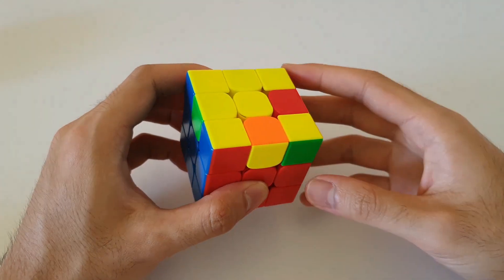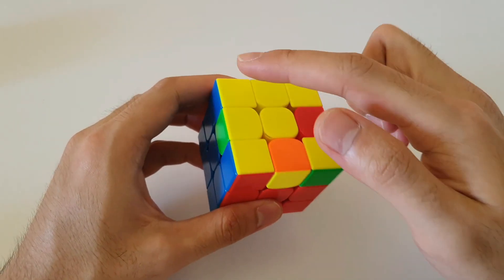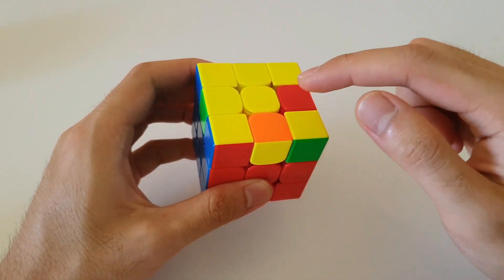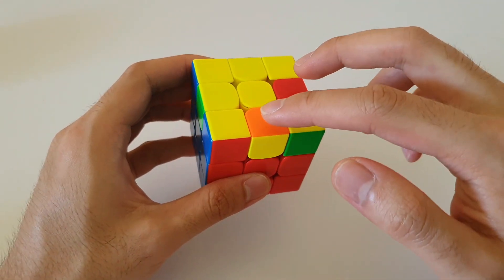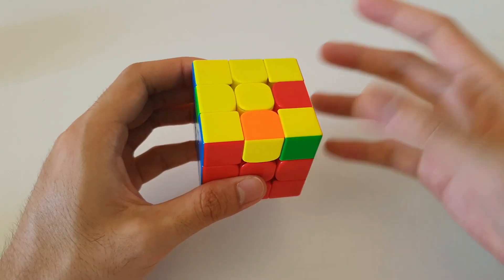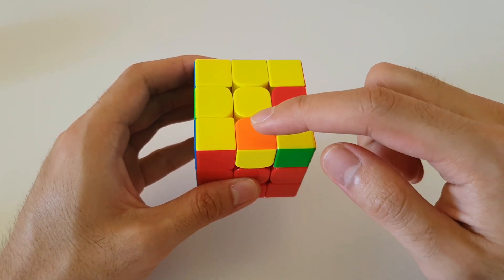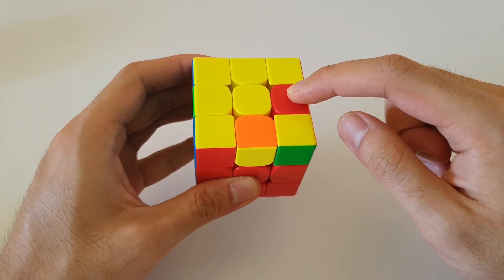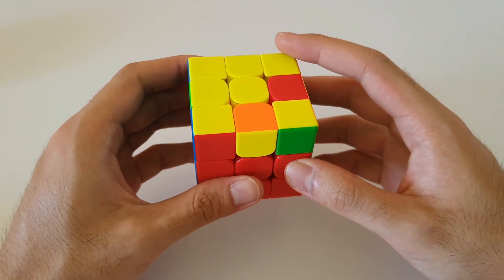Next up, moving on to the cases where all the corners are oriented, but only the edges are flipped. The first case is when two adjacent edges are flipped, so these edges are next to each other. With this case, you want to hold the flipped edges so that one of the flipped edges is at the front and the other one is on the right side. And so you want to start with this algorithm.